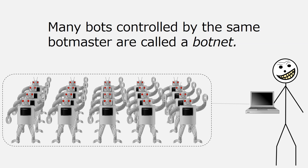Botmasters can use their botnets in a variety of ways. One of the most common uses is to crash a website by asking all of the bots on the botnet to visit the website at the same time. If the botnet is big enough, the website won't be able to handle all of the traffic and it will crash. As a variation on this attack, the botmaster might threaten to crash a particular website at a really inconvenient or financially ruinous time, unless the website owners agree to pay a ransom. For example, gambling websites are popular targets — botmasters will threaten to crash them before or during the Super Bowl, which is the busiest time of year for most gambling websites.